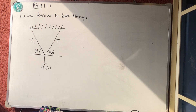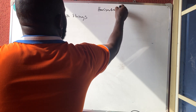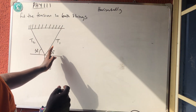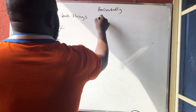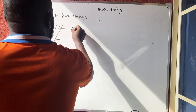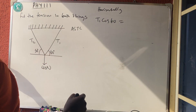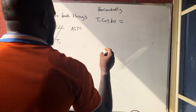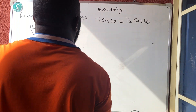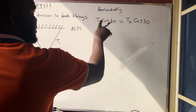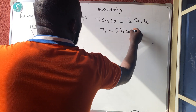Resolving horizontally: the horizontal components must balance. T1 cos 60° equals T2 cos 30°. Since cos 60° is one-half, we get T1 × (1/2) = T2 cos 30°, so T1 = 2 T2 cos 30°.